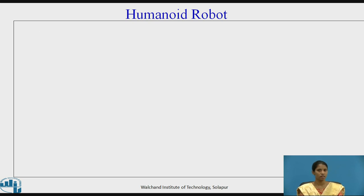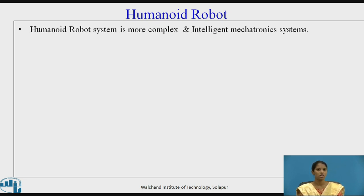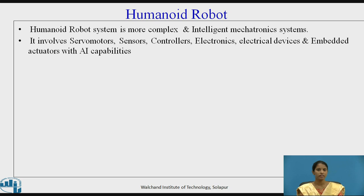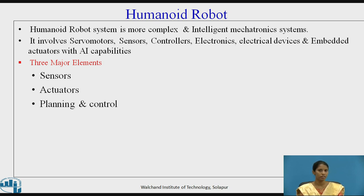Let's start with an example of a mechatronics system, i.e., humanoid robot. A humanoid robot system is a more complex and intelligent mechatronics system. It involves servomotors, sensors, controllers, electronics, electrical devices, and embedded actuators with artificial intelligence capabilities. The three major elements of a humanoid robot are: first, sensors; second, actuators; and third, planning and control.